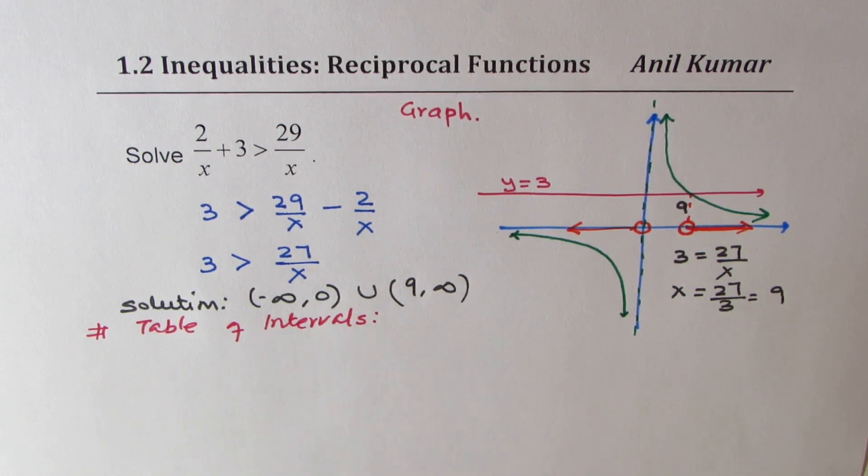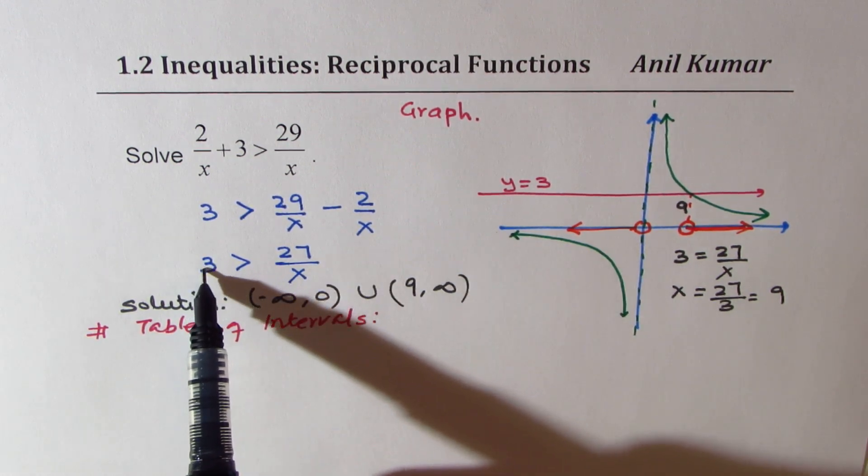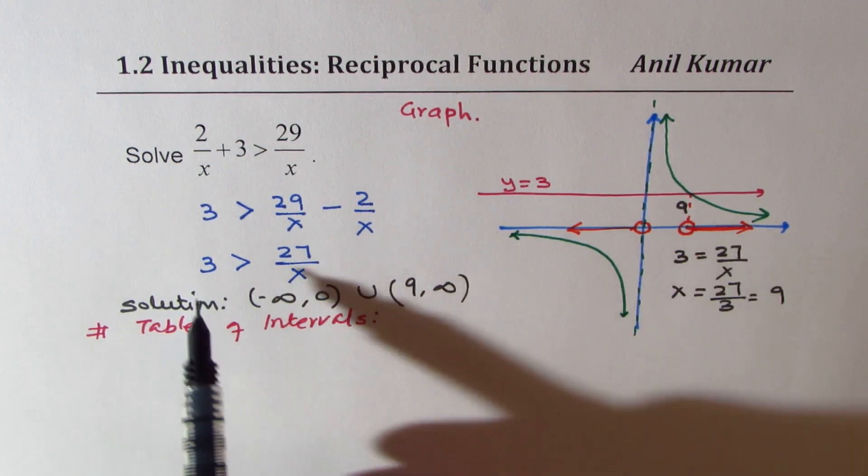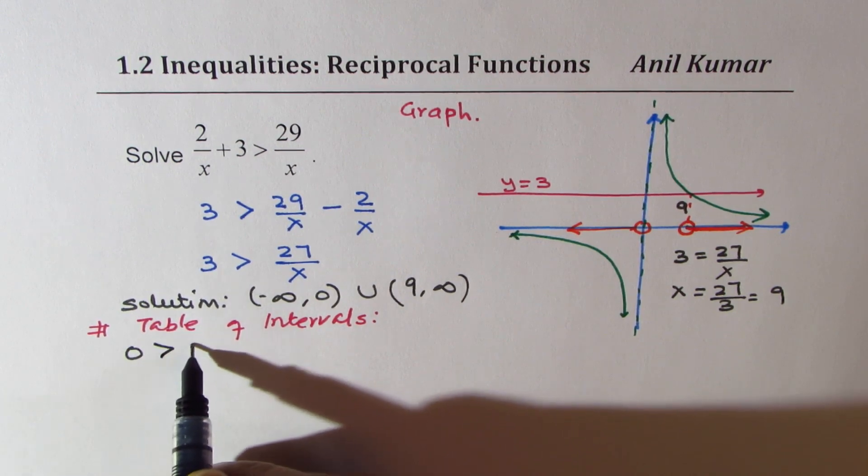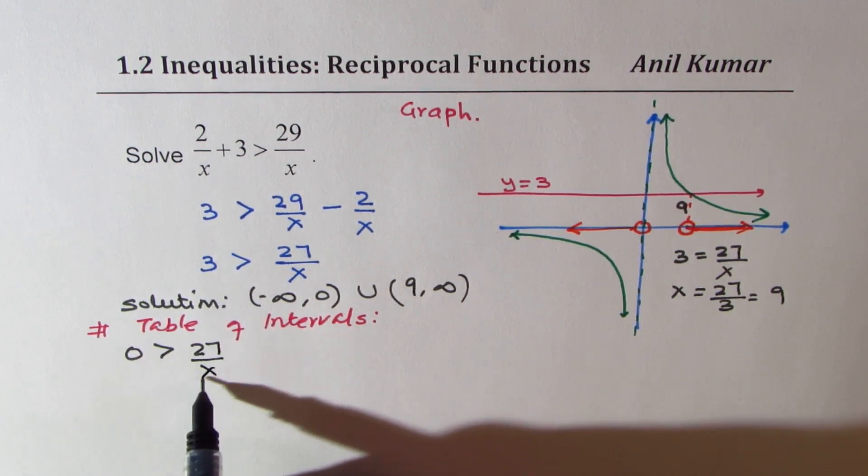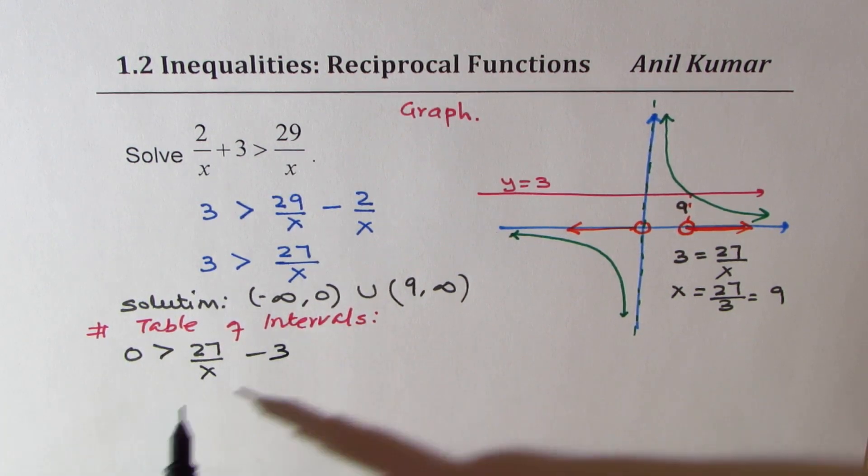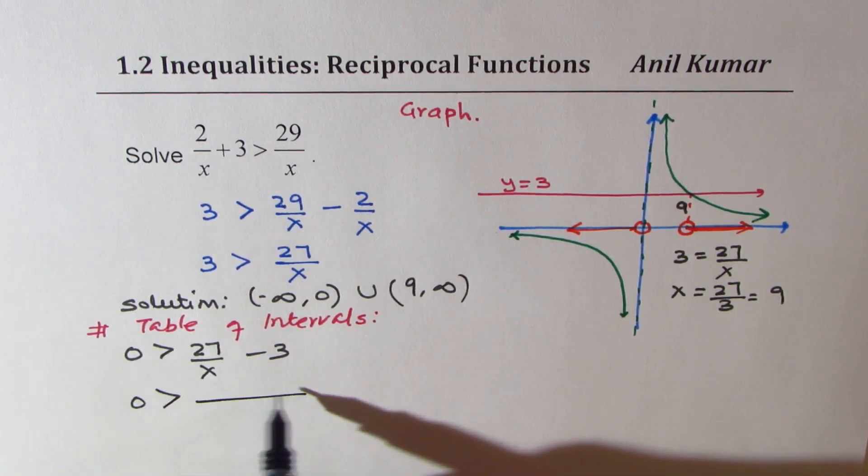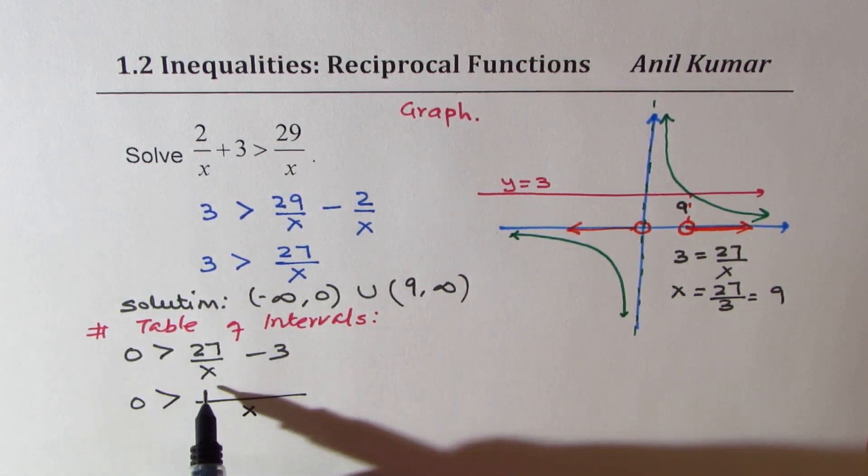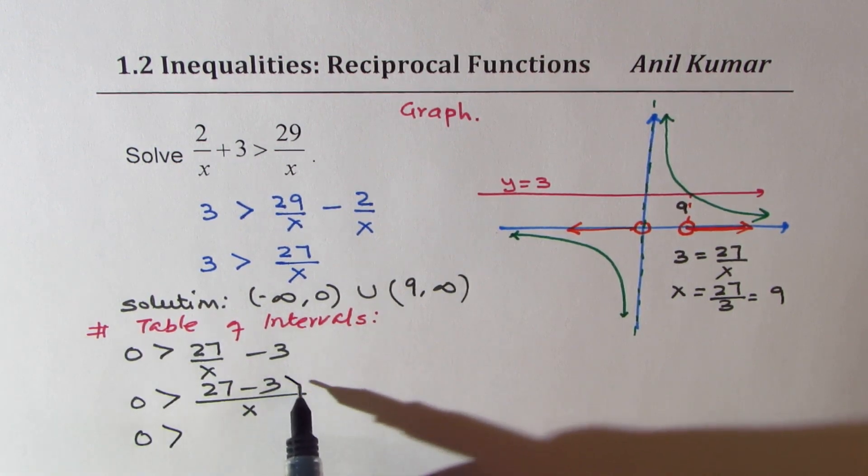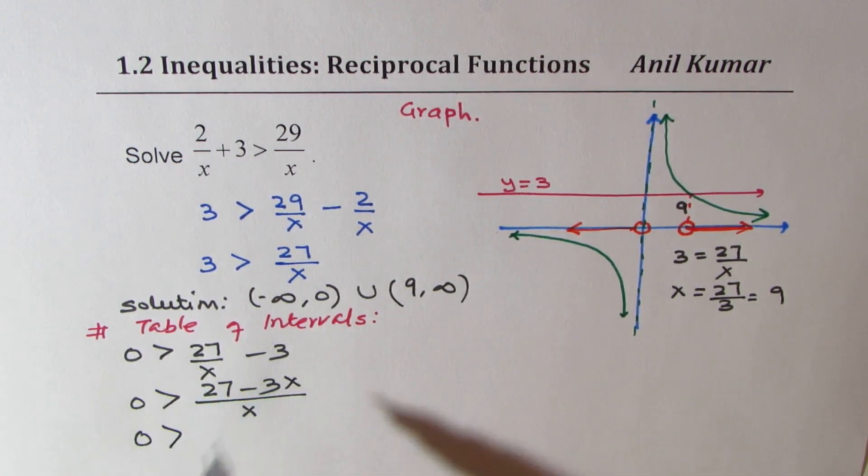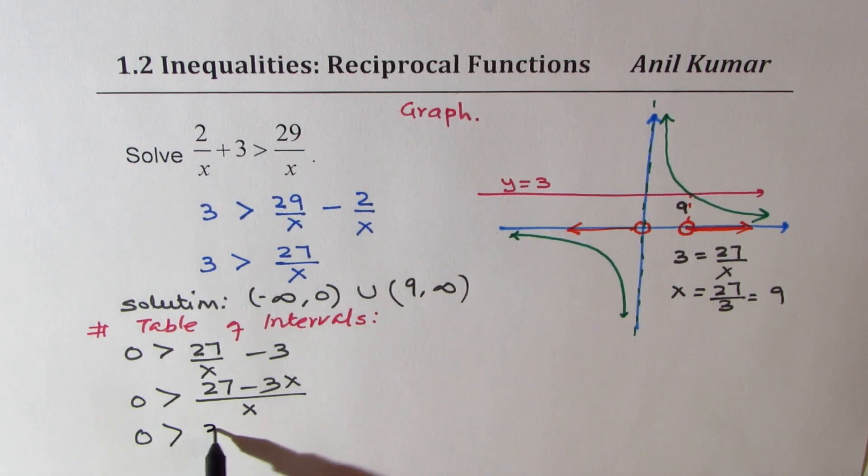Now in the second method, what do we do? We bring all the terms to one side. So let's take this 3 on the right side. We get 0 > 27/x - 3. Now we can write this as 0 > (27 - 3x)/x. The common denominator is x. We can factor the numerator. 3 is common, so we get 0 > 3(9 - x)/x.